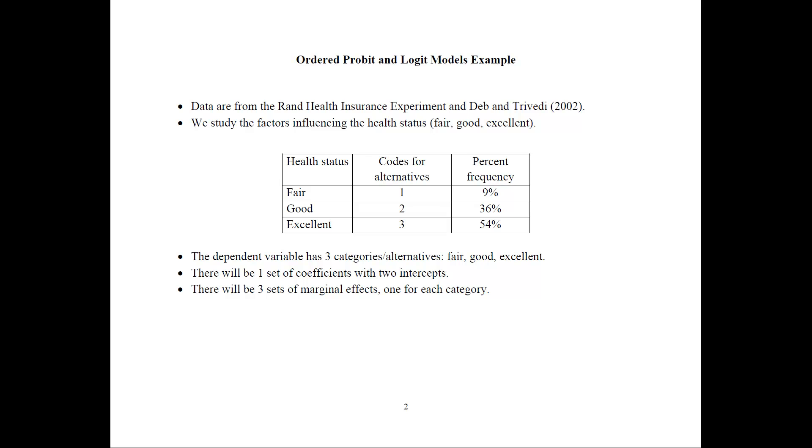The data comes from the Rand Health Insurance Experiment and Deb and Trivedi also used it. The dependent variable for our models would be health status, and that is a categorical ordered variable. So we have fair, good, and excellent as the three categories.